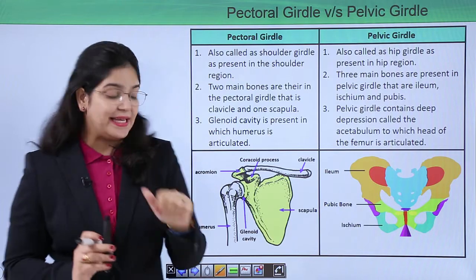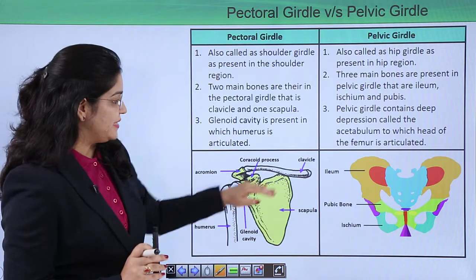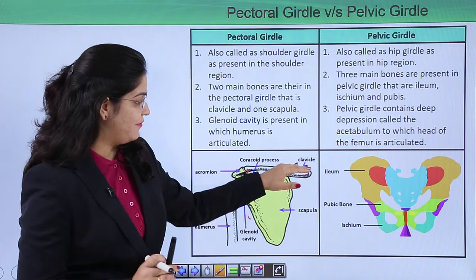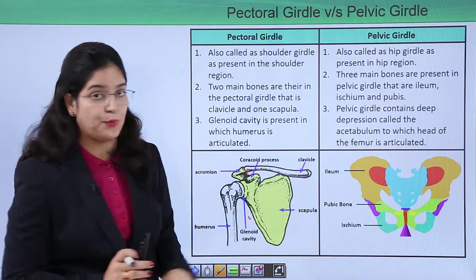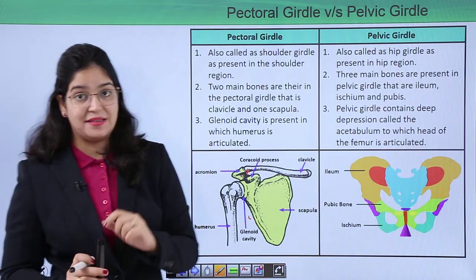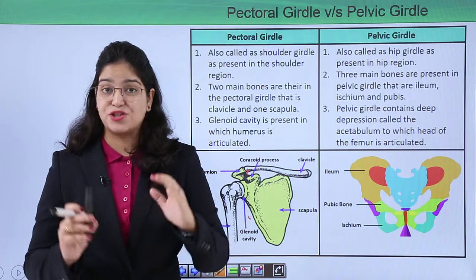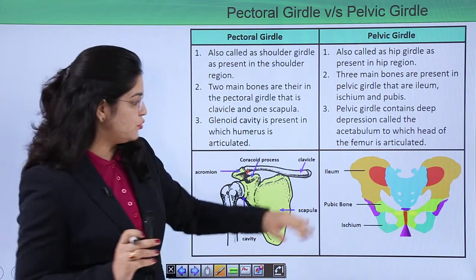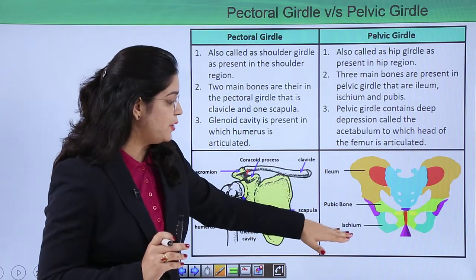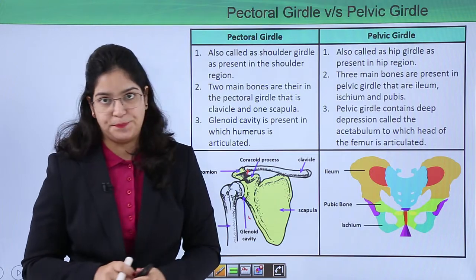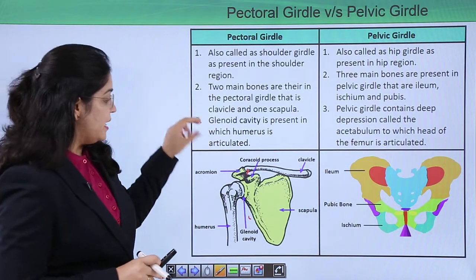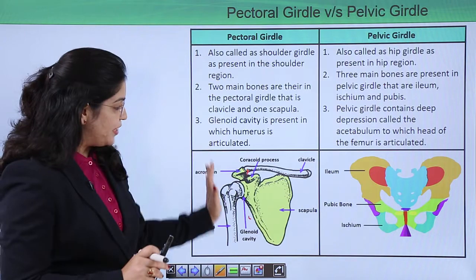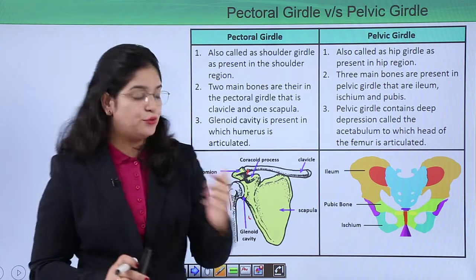The second point: the two main bones present in the pectoral girdle are the clavicle and the scapula. In the pelvic region, there are three main bones — the pelvic girdle is made up of the ilium, the pubic bone, and the ischium.